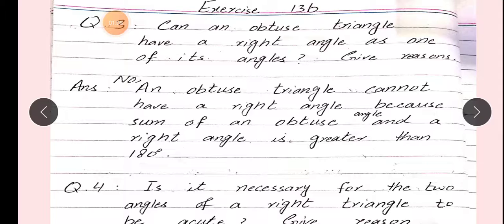No. An obtuse triangle cannot have a right angle, kyunki sum of an obtuse angle and a right angle is greater than 180. Agar hum unko add karein, to beta, woh 180 se bade ho jaate hain. Jab triangle draw karte hain, koi bhi, to uske jo interior angles hote hain, woh 180 degree ke equal hote hain. Lekin agar obtuse triangle ke angles ko add karein, to woh greater than 180 ho jaayenge, is wajah se yeh nahi ho sakta.